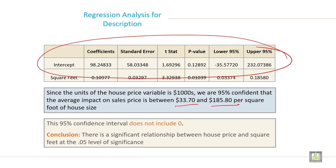This 95% confidence interval does not include 0. Conclusion: There is a significant relationship between house price and square feet at 0.05 level of significance or 95% level of confidence.